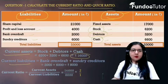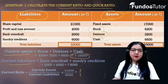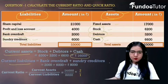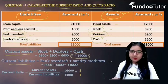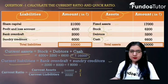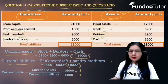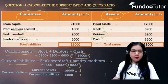The current liabilities are bank overdraft and sundry creditors. We will add the two to get current liabilities: 2,000 plus 6,000, which is equal to rupees 8,000. So current liabilities is rupees 8,000.